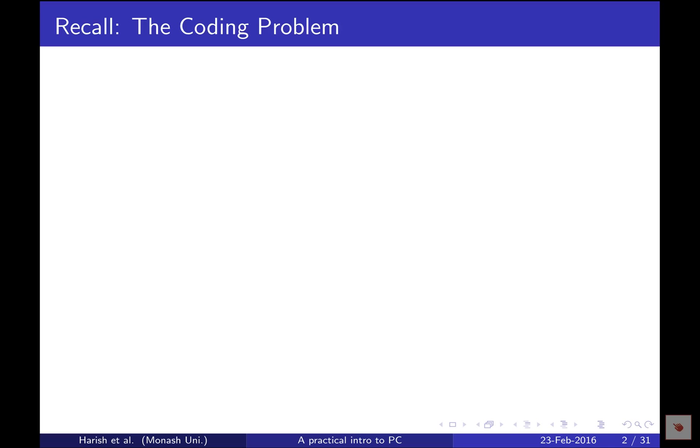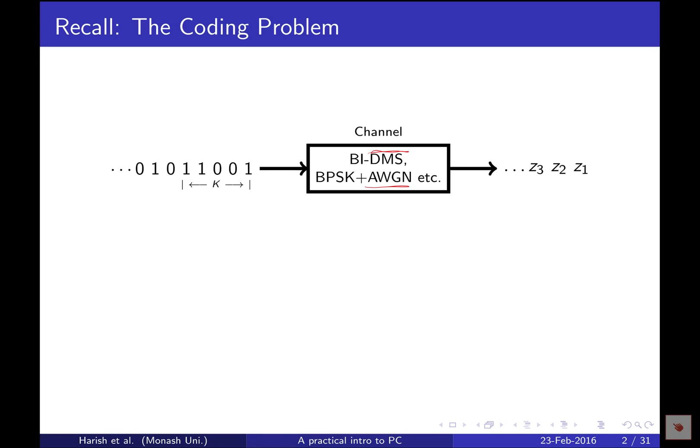When we talk about polar codes, we are working in the context of a coding problem traditionally formulated by Shannon back in 1948, which is about transmitting binary information through a noisy channel. Noisy channels are characterized by statistical models — two examples are the discrete memoryless symmetric channel and the AWGN (additive white Gaussian noise) channel.